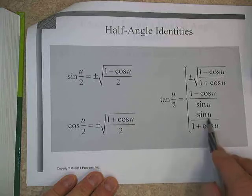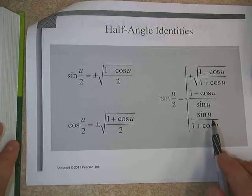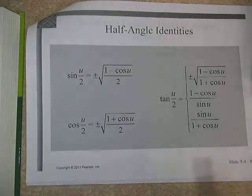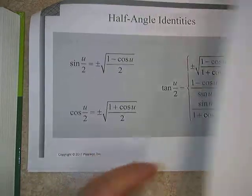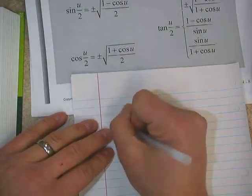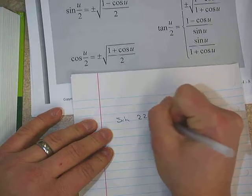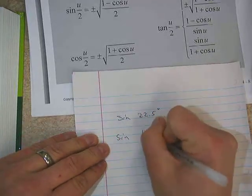We also have what we call half-angle identities. These half-angle identities are going to work very similar to our double-angle identities. In this case, we have the cosine of a half an angle. We're going to have formulas for sine and cosine and also tangent. Keep in mind, none of these have to be memorized. They just have to be applied.